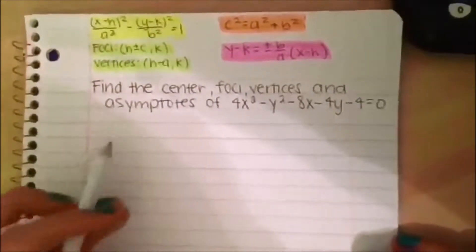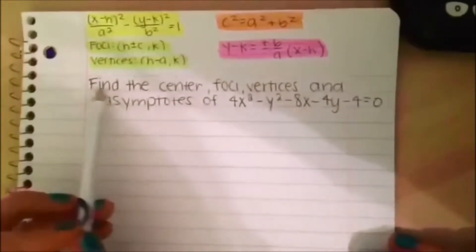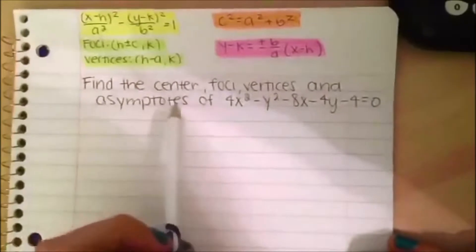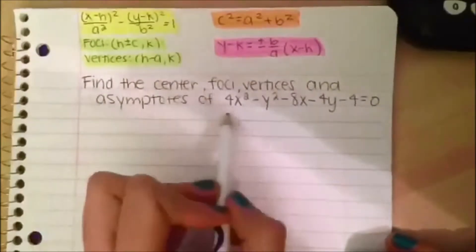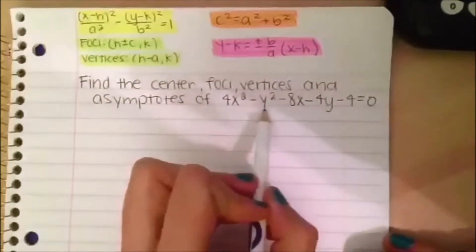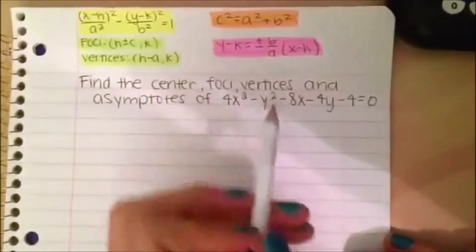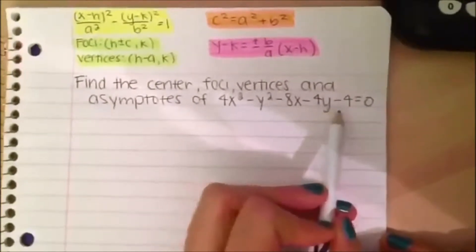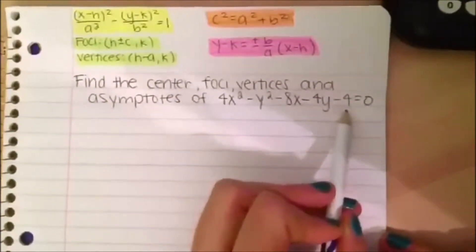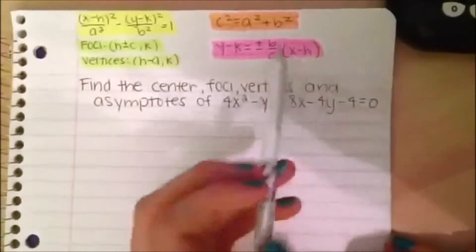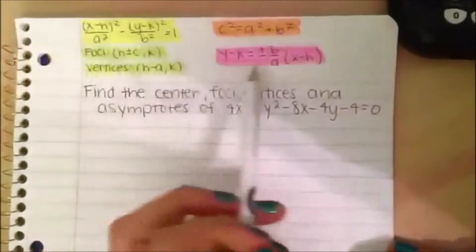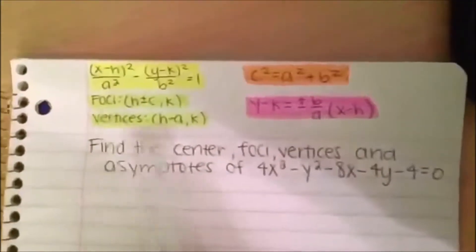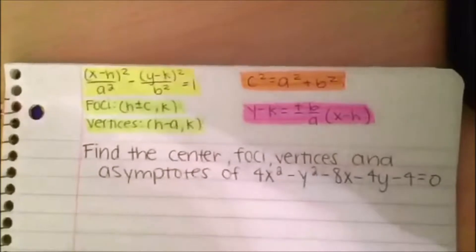This problem reads: find the center, foci, vertices, and asymptotes of 4x squared minus y squared minus 8x minus 4y minus 4 equals 0. Up here we have all the formulas that we're going to need throughout this problem.